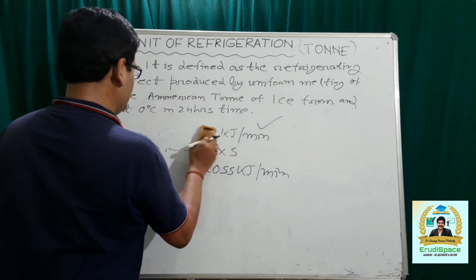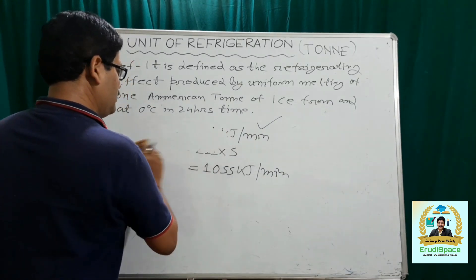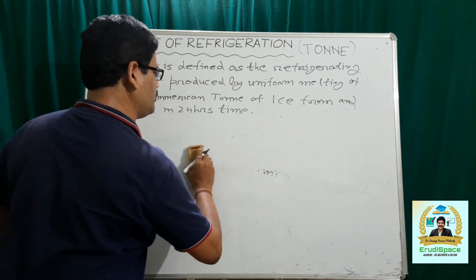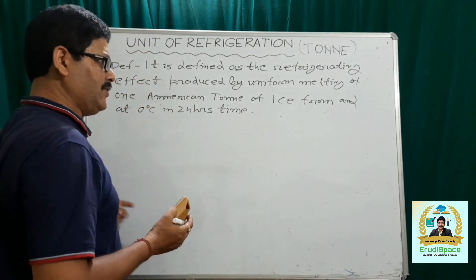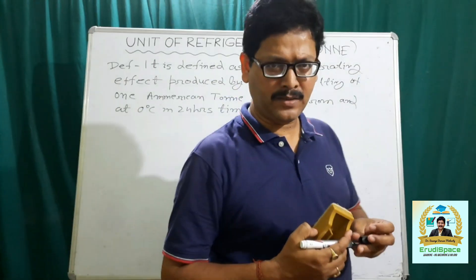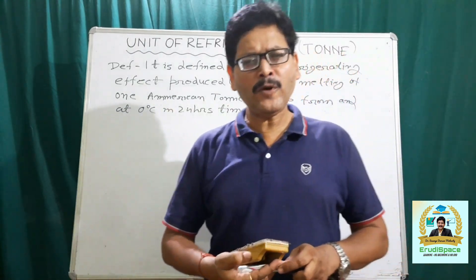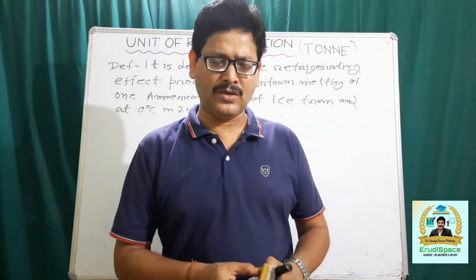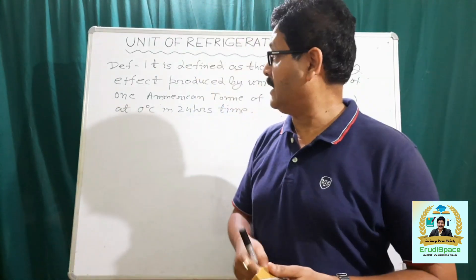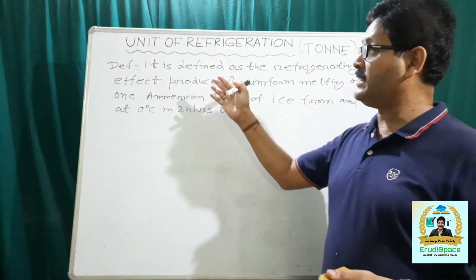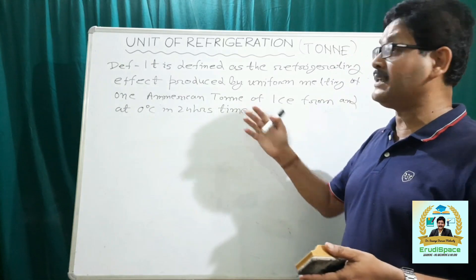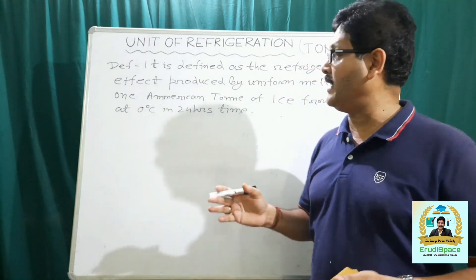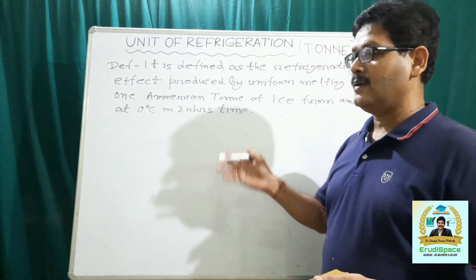Now we have to go through the mathematical calculation to show how it comes out to be 211 kJ per minute. But before that, let me tell you how the refrigerating capacity is related to the refrigerating effect produced by melting of ice.